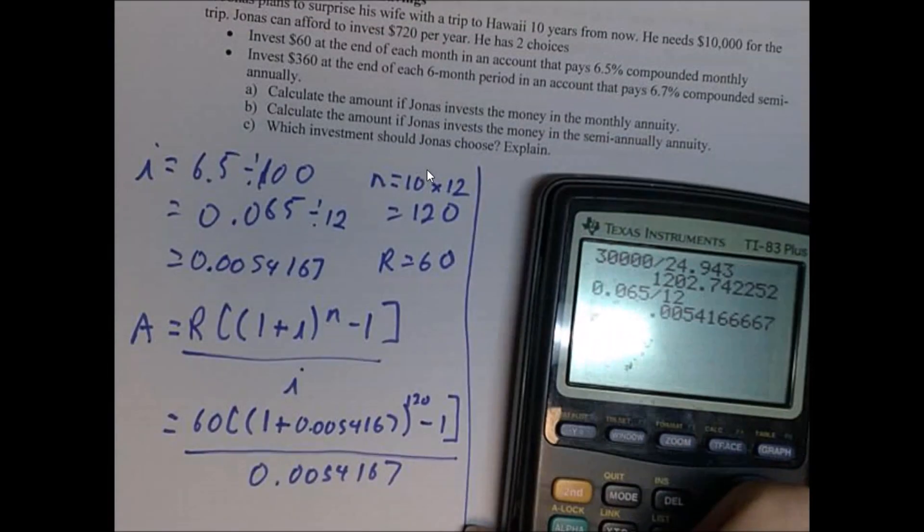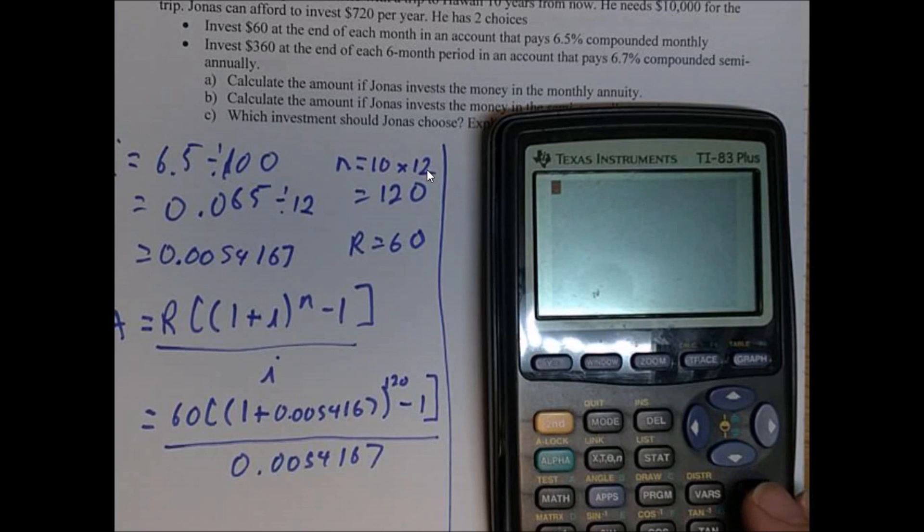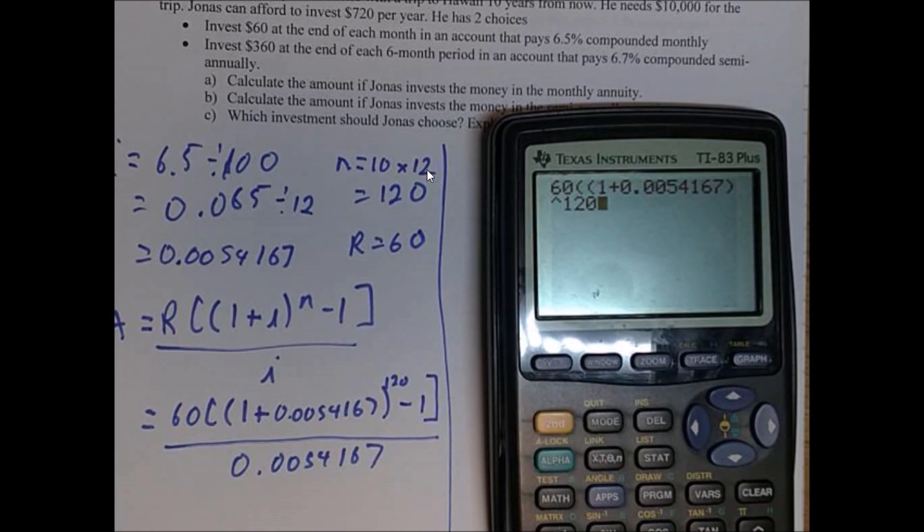And we'll put our trusty, handy-dandy calculator over here. Just clear a few things. And we're just going to put that into our calculator. So 60 bracket, bracket, 1 plus 0.0054167. Close the bracket.